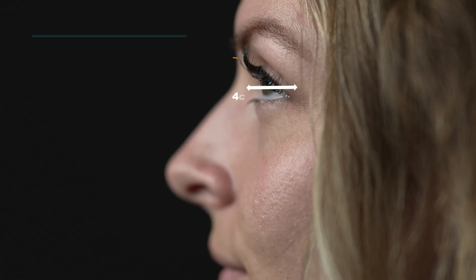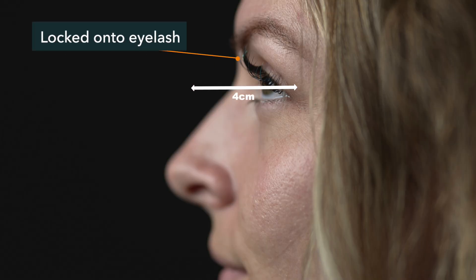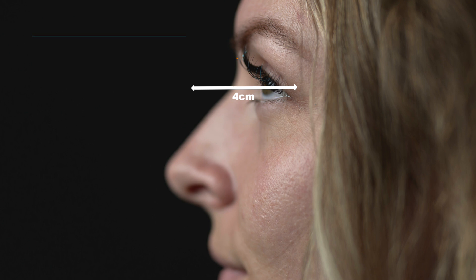In that case, you should just stop down a few stops — to f2 or f2.8 — so that if the autofocus system is tracking that eye but locks onto the eyelash, you'll have a deeper depth of field where the pupil still falls within it, and you get sharp eyes.